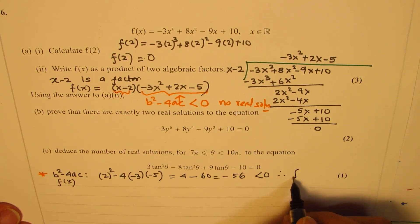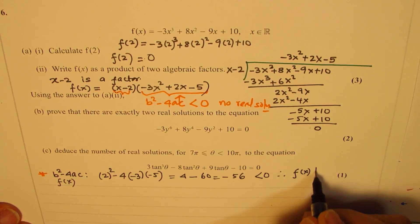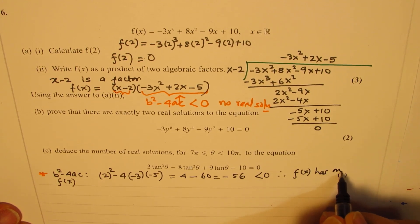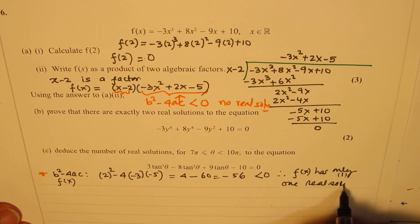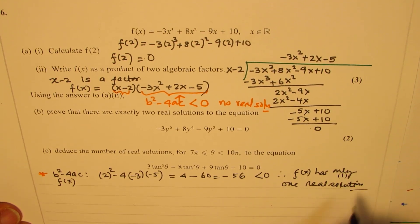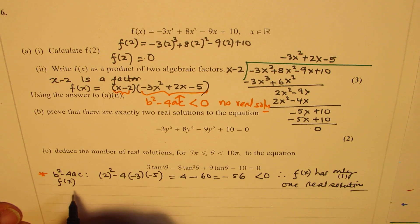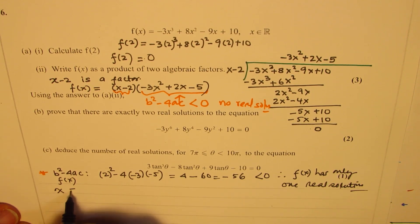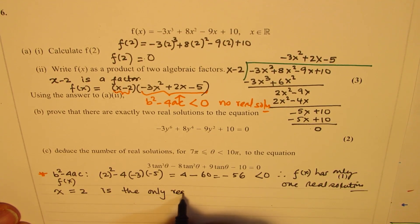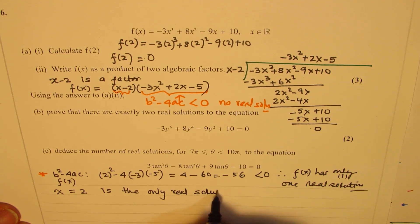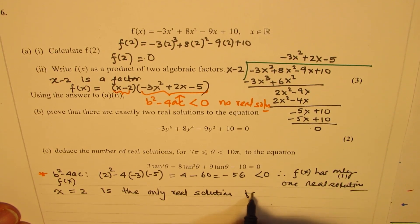We can say that f of x has only one real solution, and that real solution is x equals 2. x equals 2 is the only real solution for f of x.